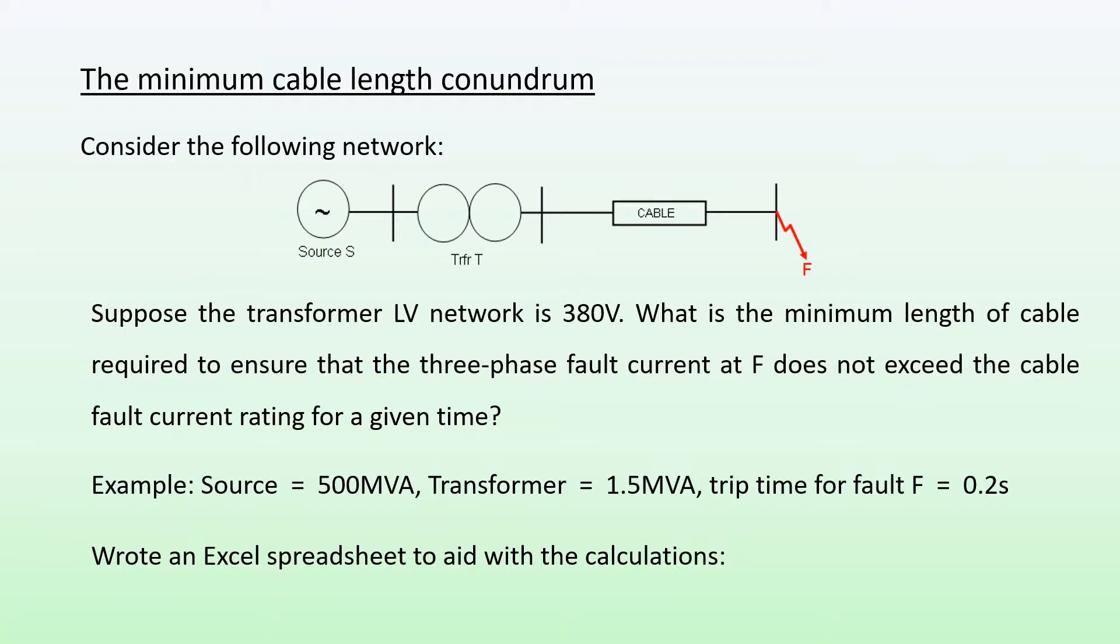For an example, I have a source which is 500 MVA, transformer is 1.5 MVA, and my trip time for the fault F is 0.2 seconds. Notice my cable has a fault at its end, which means it's a through-fault with regards to my cable. I wrote an Excel spreadsheet to aid with the calculations.